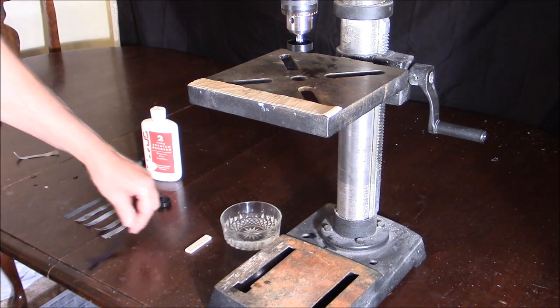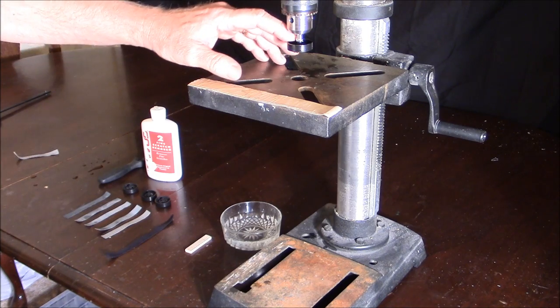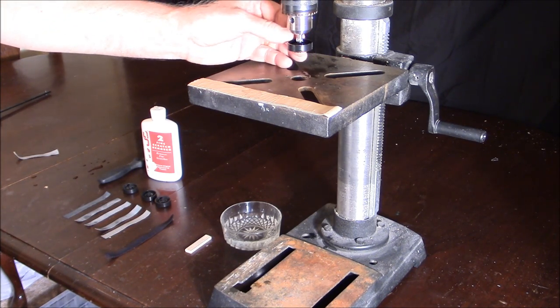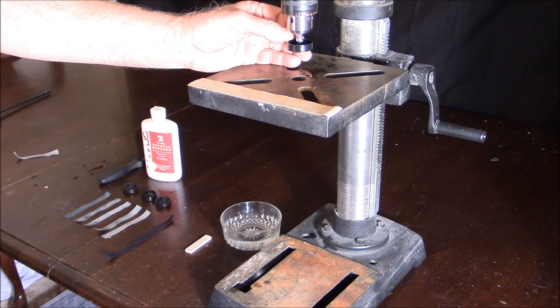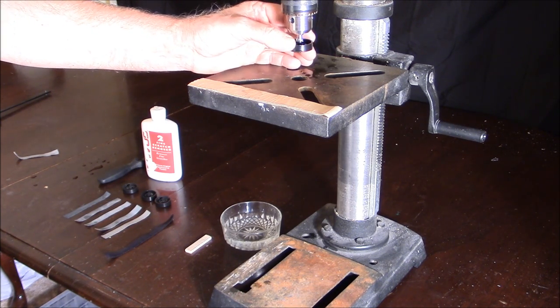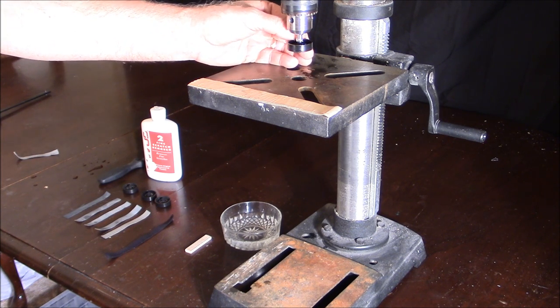As I'm working with each grit, I also work at rounding the inside edge of the wheel. So if it rubs up against the guide rail, it doesn't have a sharp edge, it can't grab anything, and it runs smoother.